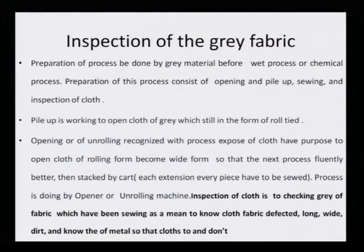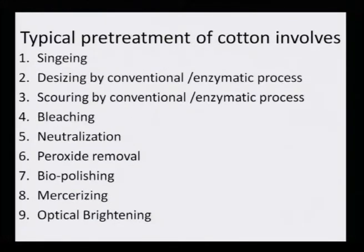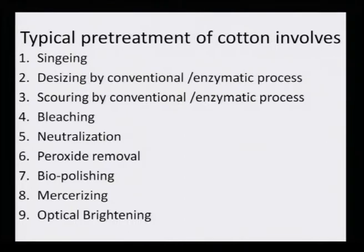A typical pretreatment of cotton involves singeing; desizing by conventional or enzymatic process; scouring by conventional or enzymatic process; bleaching; neutralization; peroxide removal; biopolishing; mercerizing; and optical brightening. These are the various steps that cotton has to go through. Similarly, for synthetic fibers, we have to see what all needs to be done — if it became dirty while being woven, it needs to be scoured and bleached.